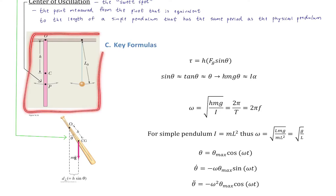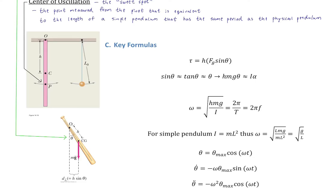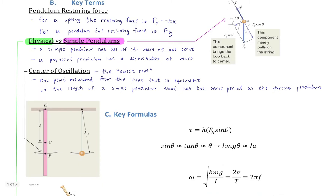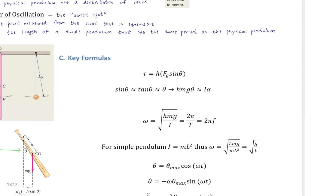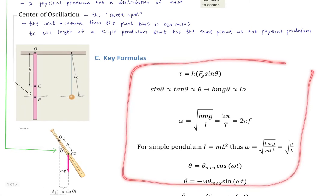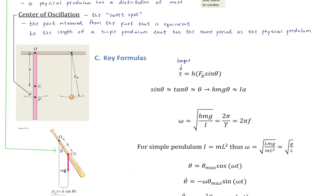Mathematically and mechanically, the center of oscillation is about replacing the physical pendulum with a simple pendulum. Now let's look at the mathematical background showing that a pendulum — physical or simple — can be treated as a simple harmonic oscillator, and thus will have position, velocity, and acceleration functions in sine or cosine, just as we saw for the spring.